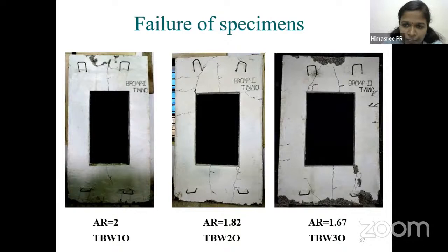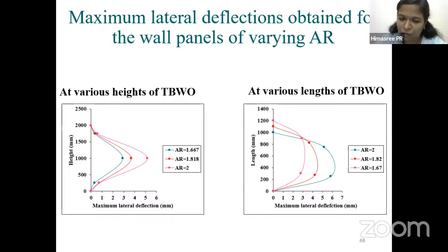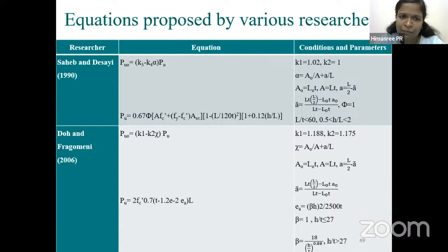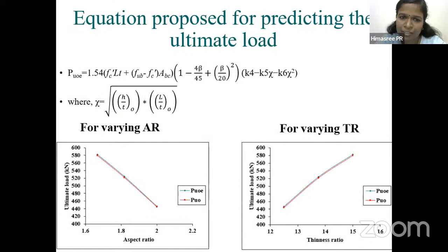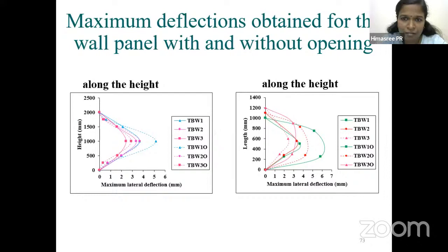In the tested bamboo reinforced concrete two-way wall panels with openings, horizontal cracks were found in the column strips, and vertical flexural and inclined cracks in the beam strips. Even though no significant visible deflection occurred, biaxial bending was confirmed from measurements. The maximum deflection was around 5–6 mm. Two researchers have proposed equations for two-way RCC wall panels with openings, but these did not compare satisfactorily. A new equation was developed, and it compared satisfactorily with test results.